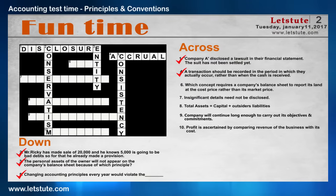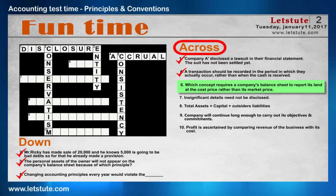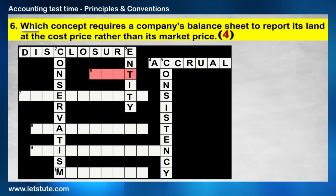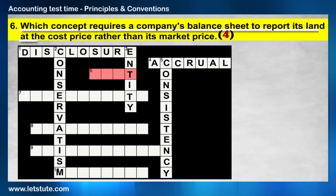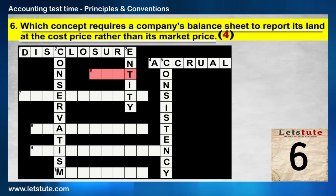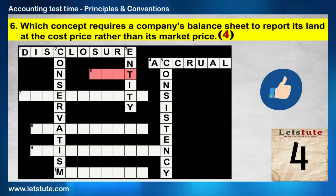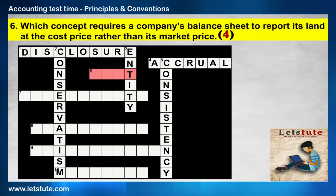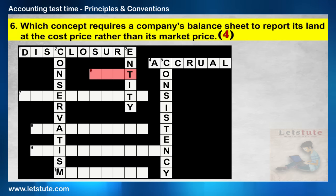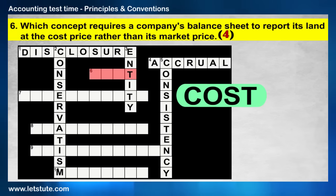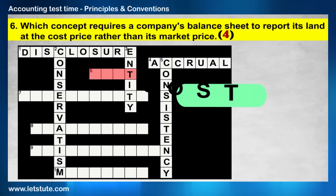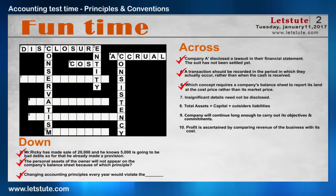The sixth one is across: Which concept requires a company's balance sheet to report its land at cost price rather than its market price? It's very easy. Yes — the cost principle.